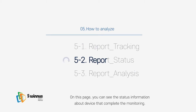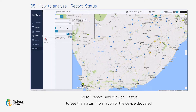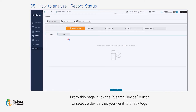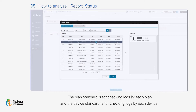On this page you can see the status information about the device that completed monitoring. Go to Report and click on Status to see the status information of the delivered device. Click the Search Device button to select a device where you want to check logs. The search device pop-up has a Plan Standard tab and a Device Standard tab — the Plan Standard is for checking logs by each plan, and the Device Standard is for checking logs by each device.